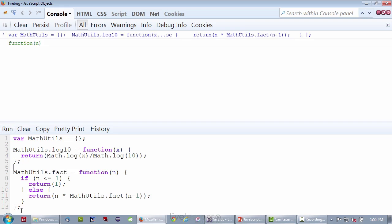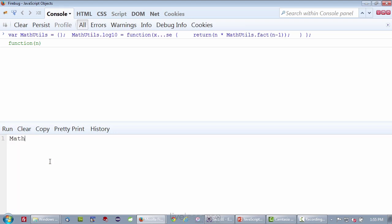All right, so I run that, define them all, and now if I want to compute some factorials, I cannot just say fact. If I say fact of one, it's going to tell me there is no such function called fact. I have to do MathUtils.fact.